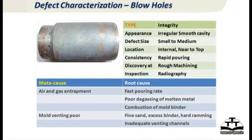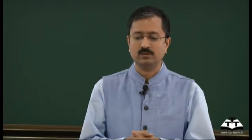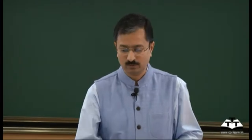Blowholes are like gas porosity but bigger holes. The sources of gas in castings are: entrapped air, binder combustion from binders in the mold, and moisture turning to steam in a sand mold. All of these cause gas, and if that gas does not escape, you get blowholes — either a large number of small ones or big ones. Especially in cores, you tend to get large blowholes.